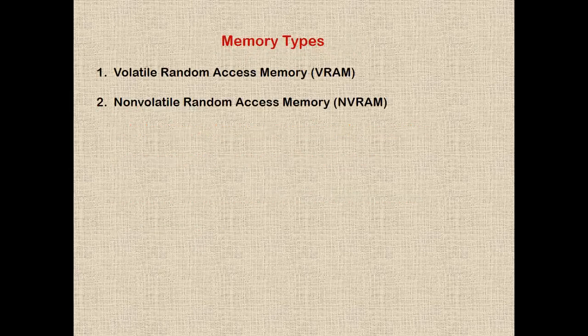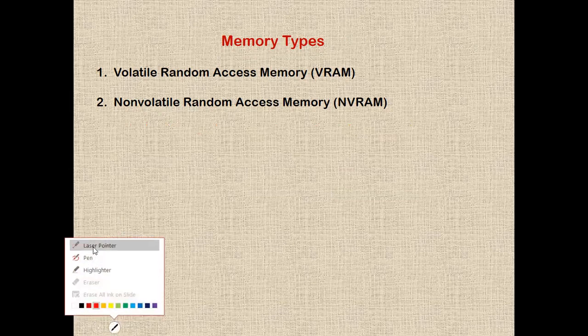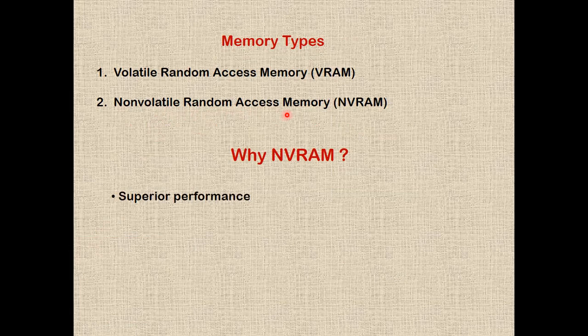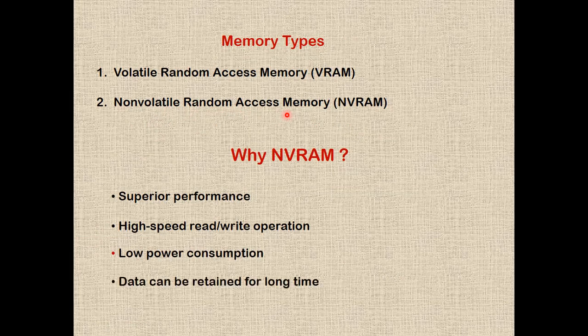As we all know, there are two types of memory. The first one is volatile random access memory, and the second one is non-volatile random access memory. The specialty of NVRAM over VRAM is that it has superior performance, high-speed read and write operations, low power consumption, and data can be retained for a long time even when the power is turned off.